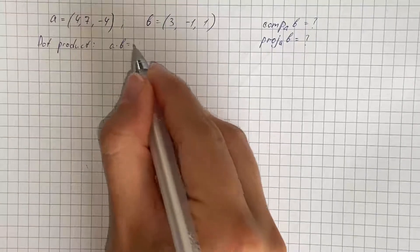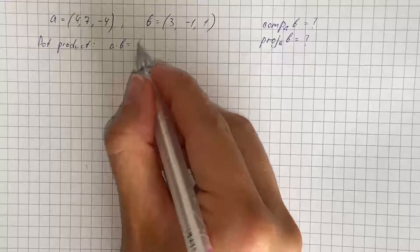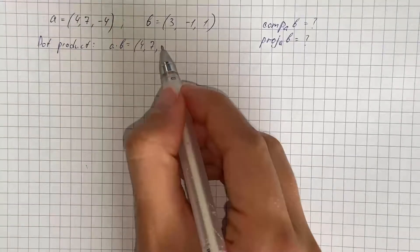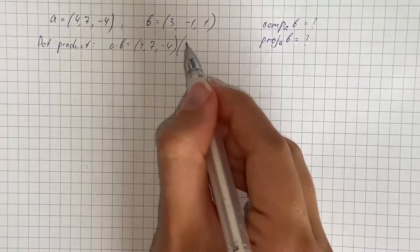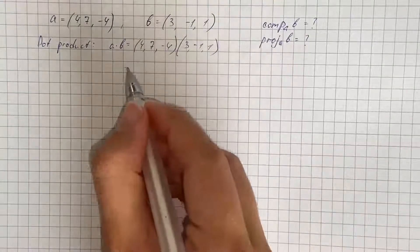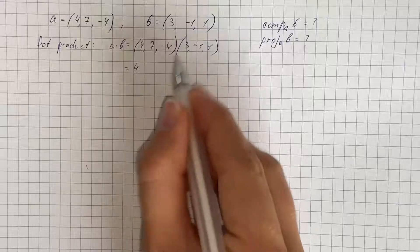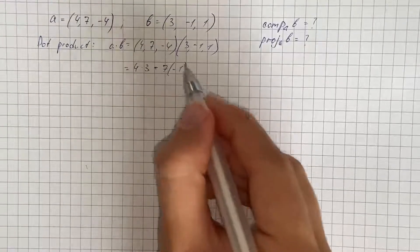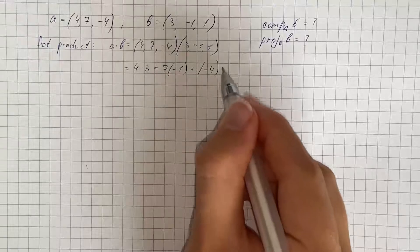We're going to multiply each coordinate separately and then add them. Therefore we get 4 times 3 plus 7 times negative 1 plus negative 4 times 1.